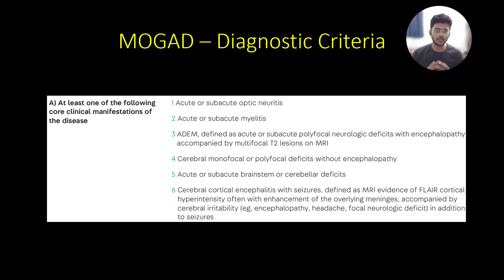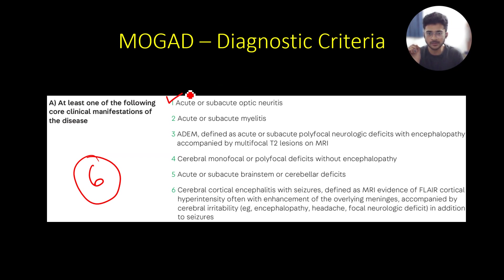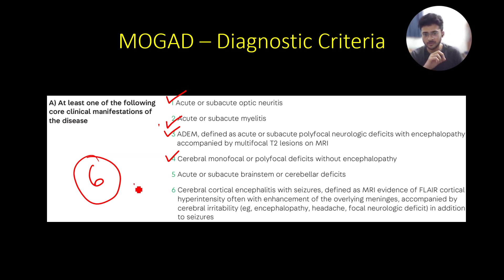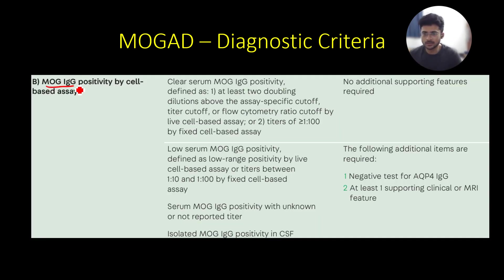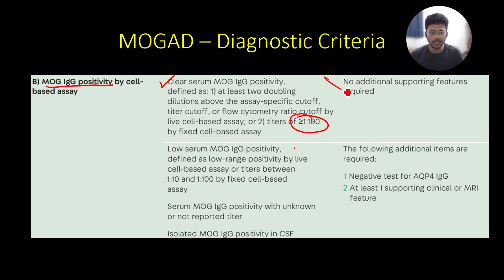For the diagnostic criteria, there are six core clinical features: (1) optic neuritis, (2) myelitis, (3) ADEM — acute disseminated encephalomyelitis, (4) cerebral monofocal or polyfocal deficits without encephalopathy, (5) brainstem or cerebellum involvement, and (6) cerebral cortical encephalitis. If the patient is anti-MOG positive, just one of these core clinical characteristics is needed to satisfy the criteria. If the patient has clear-cut serum MOG IgG positivity — titers of more than 1:100 — no other supporting features are needed to make the diagnosis.